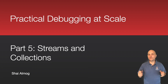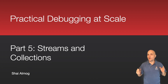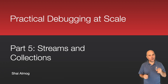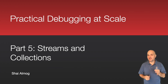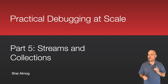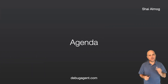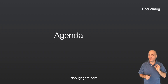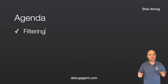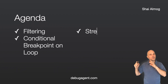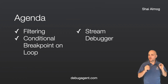Welcome back to the fifth part of debugging at scale, where we no longer stare blankly at the screen — we know where to look for that bug. In this section we discuss streams and collections. These constructs are much harder to debug because of the issue of scale. Notice that here I'm talking about Java 8 and higher streams. These streams come from the realm of functional programming, and we'll dig deeper into them.